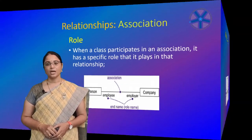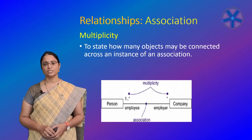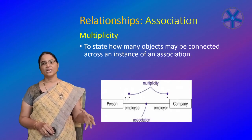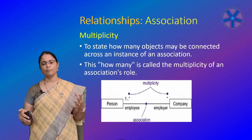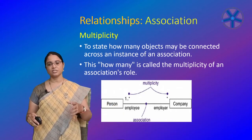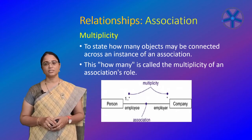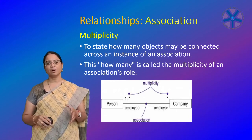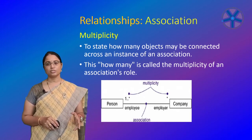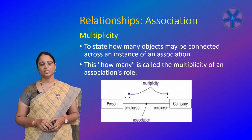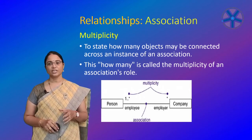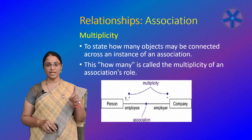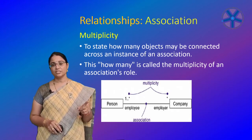The third adornment is multiplicity. It's important to state how many objects may be connected across an instance of an association. For example, a company has one employer but many employees. Multiplicity is represented as a range of integers specifying the possible size of the set of related objects, written with minimum and maximum values separated by two dots. For example: exactly one is '1', zero or one is '0..1', one or more is '1..*', zero or more is '0..*' or '*'.